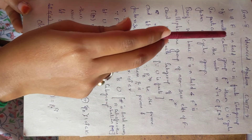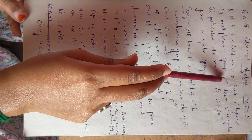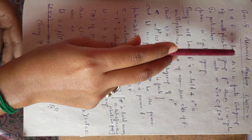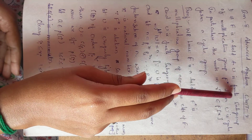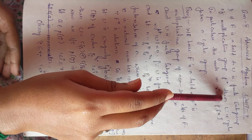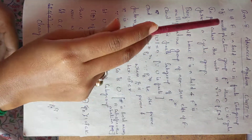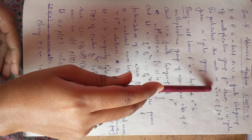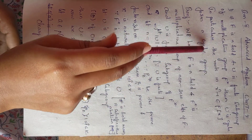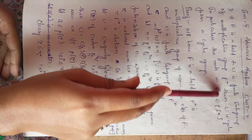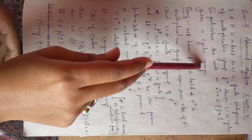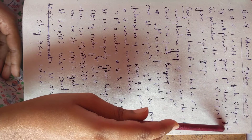The hypothesis is: f is a field, f* is the multiplicative group of f, and u is a finite subgroup of f*. We have to show that u is cyclic. We also need to prove that the polynomial x^n minus 1 has roots which form a cyclic group. Before proving that, we first show that u is a cyclic group.